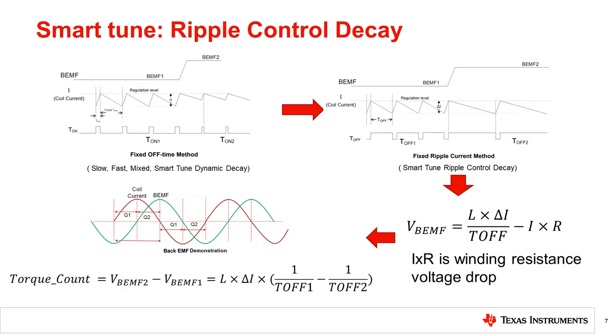From the previous page, we know the goal of decay mode is keeping the winding current close to the ideal sinusoidal waveform and minimizing the ripple amplitude. On top of that goal, a special decay mode could achieve a special function, such as the ripple control decay for sensorless stall detection function.